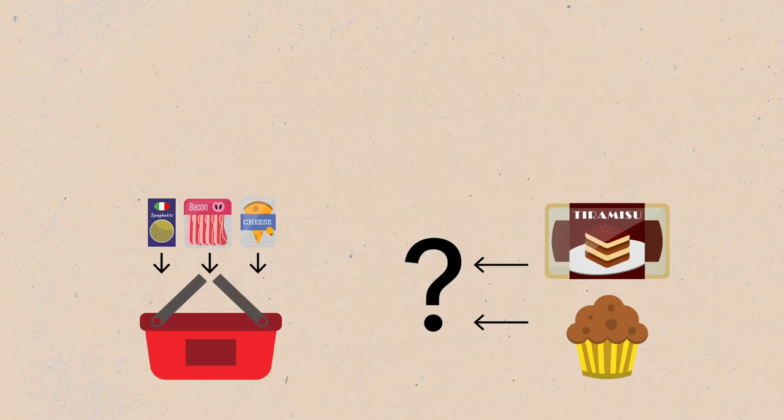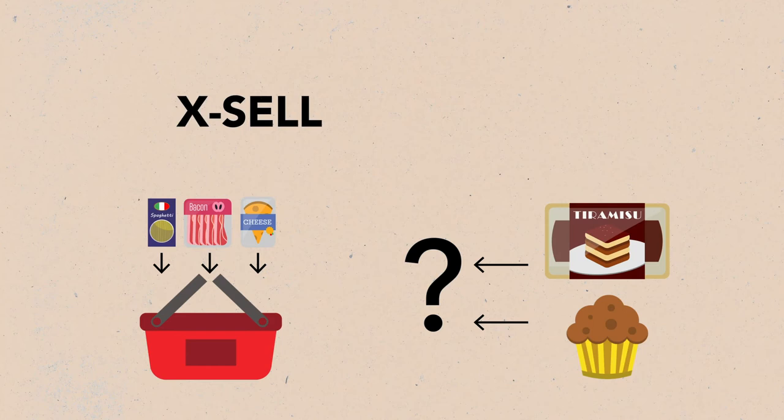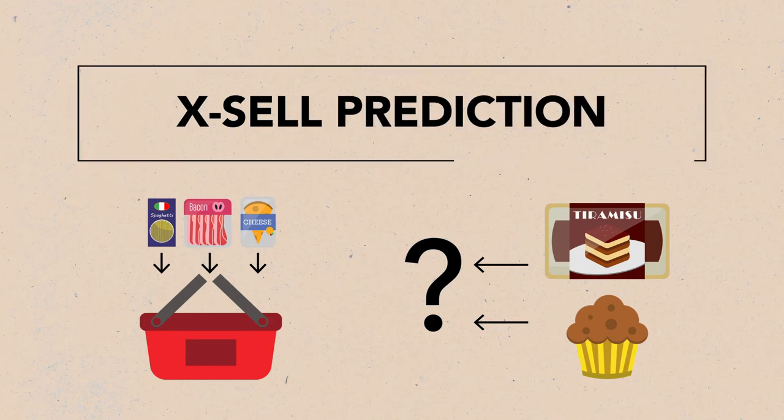Now let's jump into the second case: cross-sell prediction, or basket extension, which is based on similar customer segments.